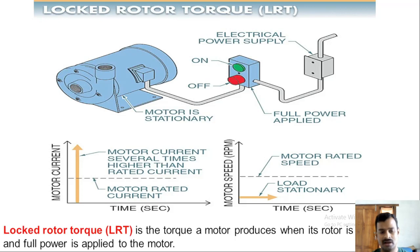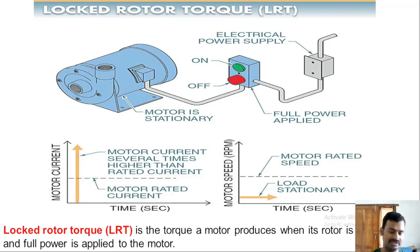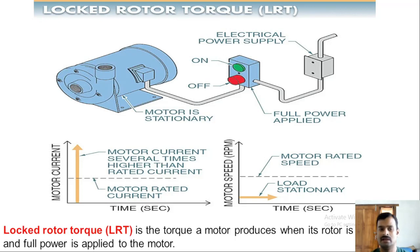The difference between locked rotor current and starting inrush current is important. Locked rotor torque and locked rotor current refer specifically to when full supply voltage is given directly to the motor. If voltage is reduced by any starting method — such as star-delta, auto-transformer, or primary resistance starting — then the current and torque during starting are called starting current and starting torque, not locked rotor current or torque.